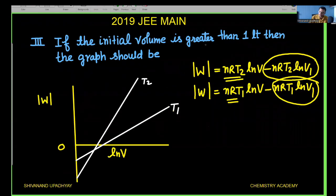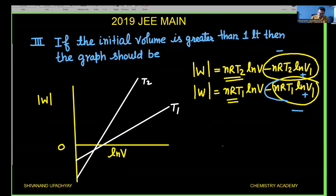The third possibility is when the initial volume is greater than one liter. In this case ln(V1) is positive, making the intercept negative. At higher temperature the intercept is more negative and at lower temperature it is less negative. The slope at higher temperature is steeper and at lower temperature less steep. These should be the options provided — but only if the initial volume is clearly mentioned in the question.